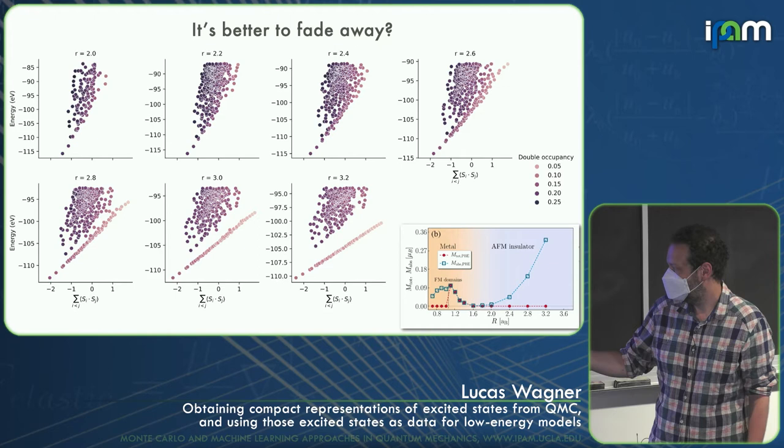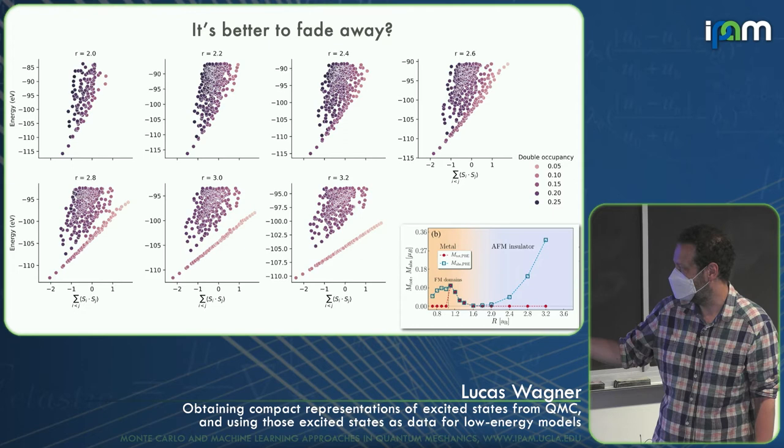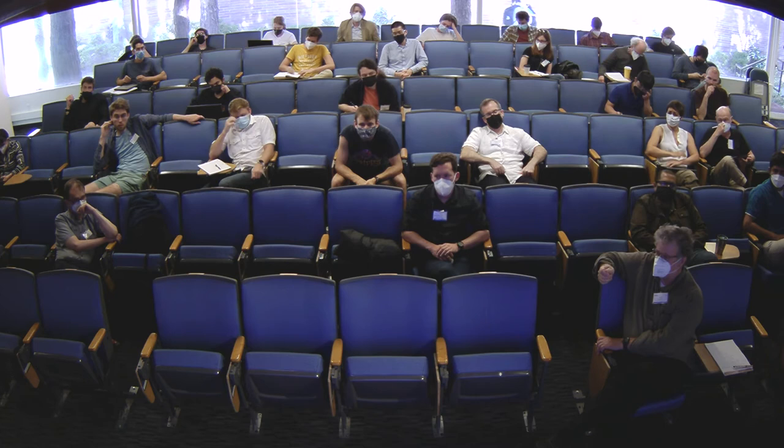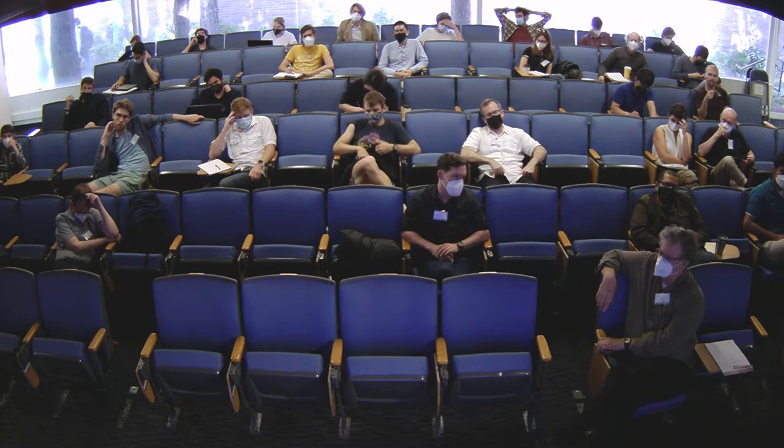Depending on how comfortable you are with the cutoff, maybe at R = 2.8 or 3.0 we have pretty clear spin-like excitations. One thing to note: the ground state of the Heisenberg model has a very negative spin-spin correlation descriptor, and it actually comes up a bit. So if you fit a Heisenberg model, it would find a ground state all the way down there, which wouldn't really match our data. You have to be careful about the Hilbert space matching.